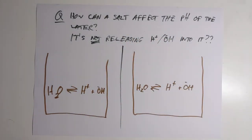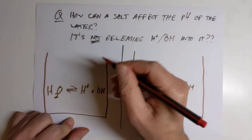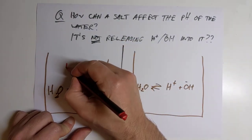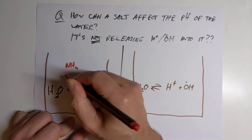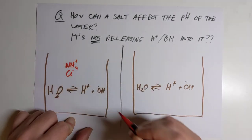Into the beaker on the left, we are going to plop some ammonium chloride. So let's plop some ammonium chloride into it. The ammonium chloride will dissolve. And you will have ammonium ions and chloride ions floating about in the water.